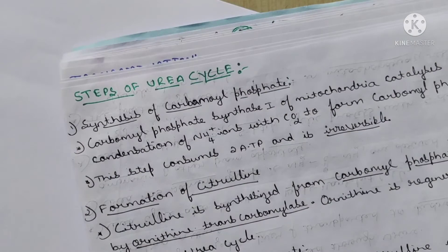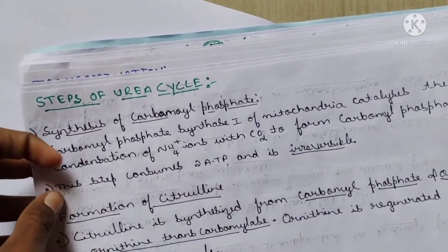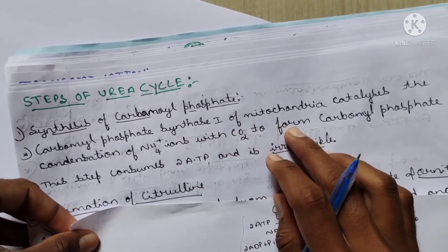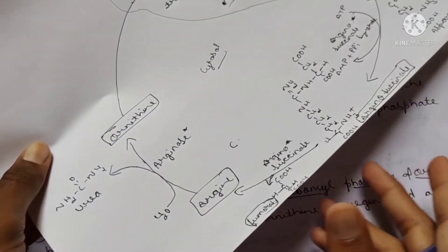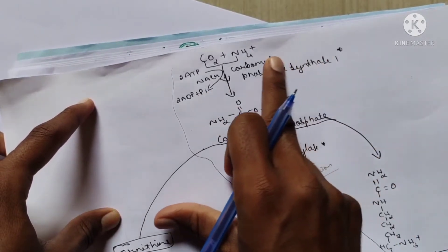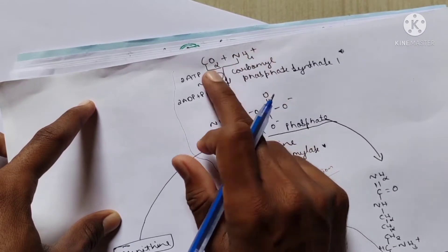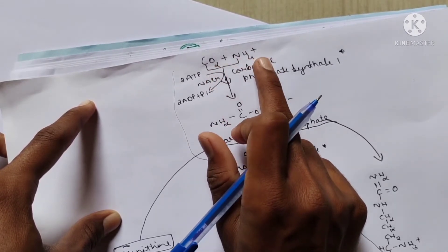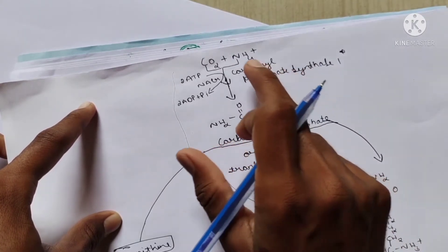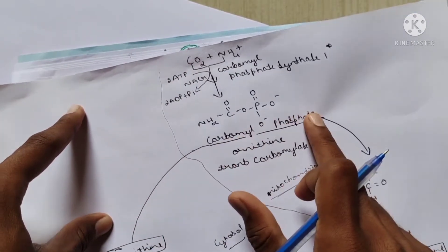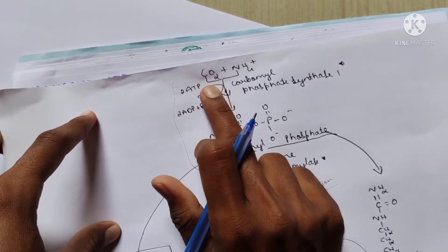The first step of the urea cycle is the synthesis of carbamyl phosphate. Carbamyl phosphate synthetase 1 of the mitochondria catalyzes the condensation of the ammonia ion with carbon dioxide to form carbamyl phosphate. This step consumes two ATP and is irreversible. NAG (N-acetyl glutamate) is also required. Two ATPs are utilized to prepare carbamyl phosphate.